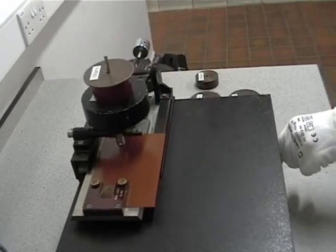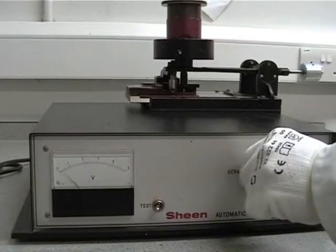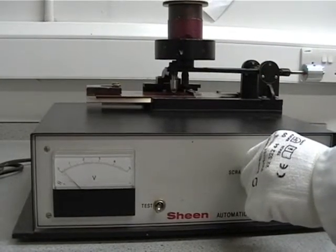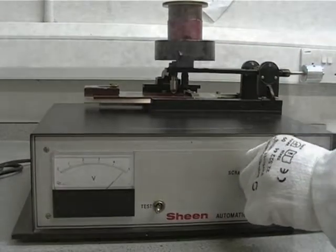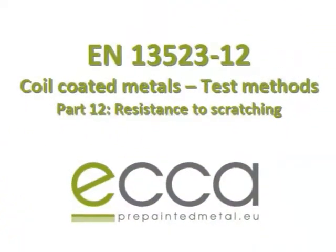The test is often used as a pass-fail test, but is also used in the specification of pre-painted metal, in which case the quoted result is the largest weight which can be applied without penetrating right through the paint layer.